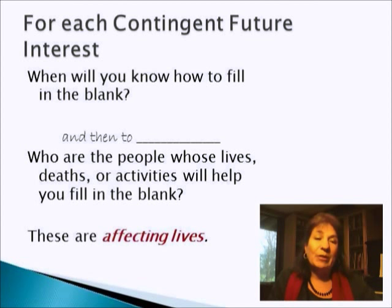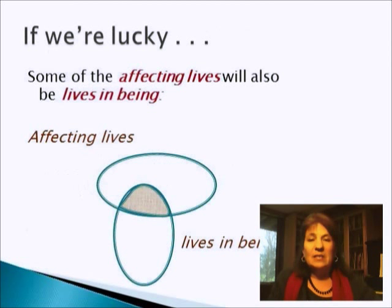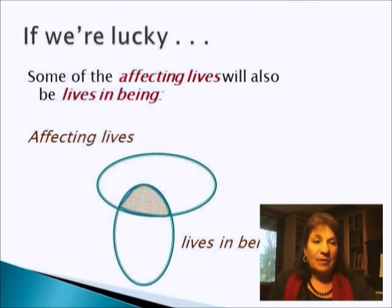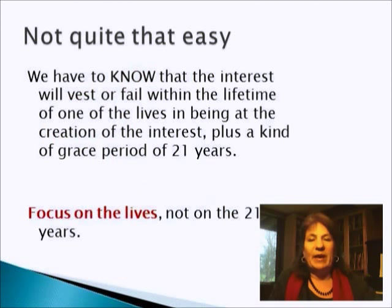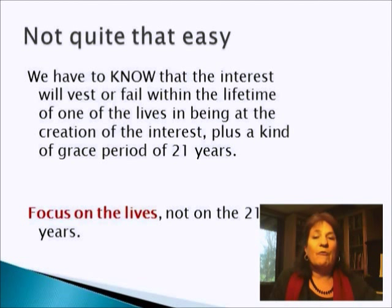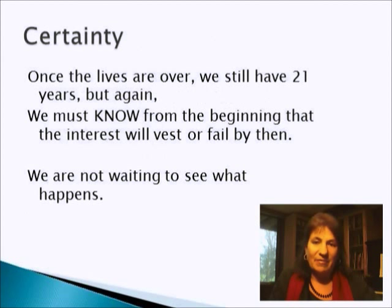Some of those affecting lives will also be lives in being, hopefully. Some of the affecting lives are lives in being. If they're not, then we don't make it. So we're looking for that overlap of lives in being and affecting lives. We have to know that the interest will vest or fail within the lifetime of one of the lives in being at the creation of the interest, plus a kind of grace period of 21 years. Focus on the lives, not the 21 years. Focus on the lives — 21 years is just a grace period. Because once the lives are over, we still have that. But we have to know from the beginning that the interest will vest or fail by then. We're not waiting to see what happens.